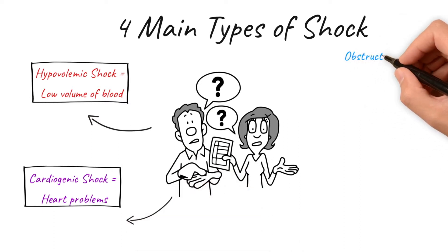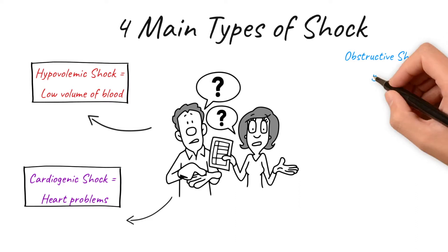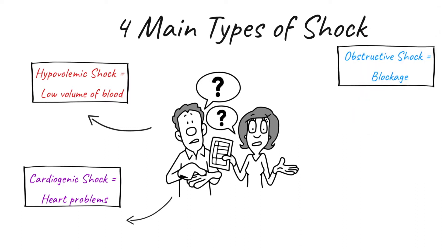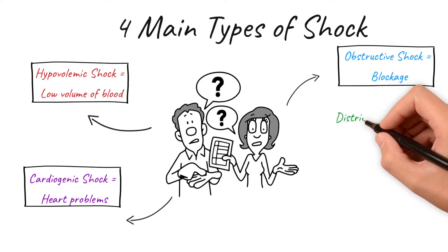Then we have obstructive shock. Obstructive shock is normally caused by an obstruction — as the name suggests — of blood flow outside of the heart. This typically occurs due to a reduction in venous return, but it may also be caused by a blockage of the aorta.